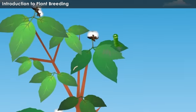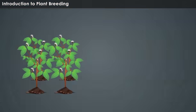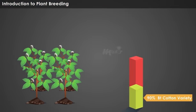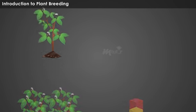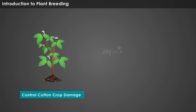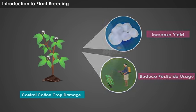What actually happens is that when the insects eat the leaves of B.T. cotton plants, they become drowsy and lethargic, thus causing less damage to the crop. Almost 90% of cultivable cotton varieties in India are B.T. cotton. When it comes to B.T. cotton cultivation, the characteristics of the cotton plant are modified to control the damage to cotton crops, to reduce the use of pesticide and to increase its yield.